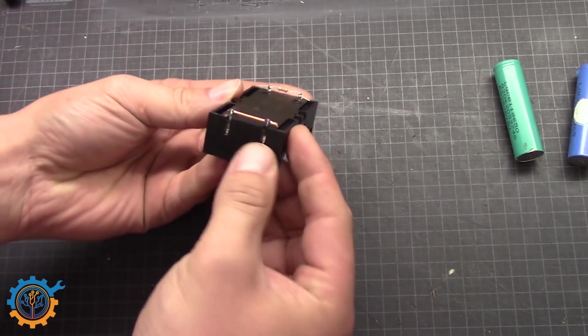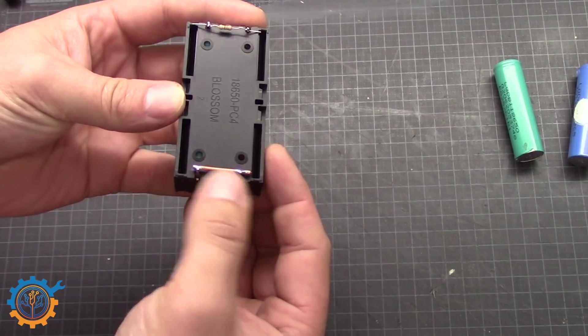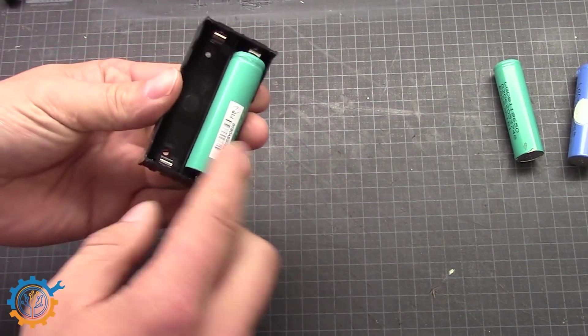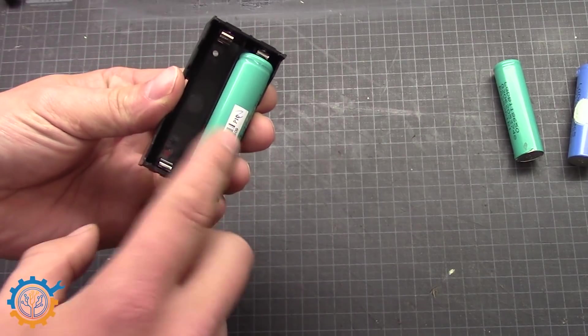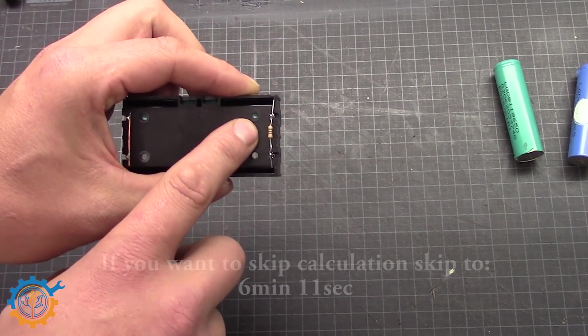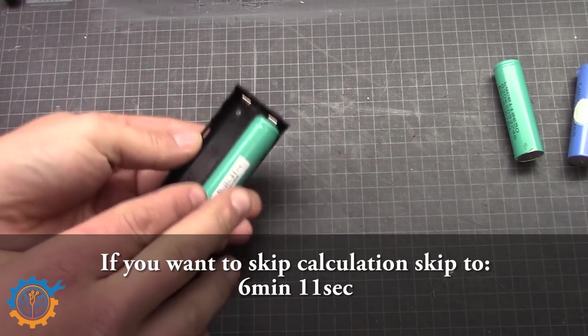Let's take this two slot 18650 cell holder. On the back side I have soldered this side together. And on this side I have a resistor. And that will cause the current to be able to flow between the two cells. But limited by the resistor.